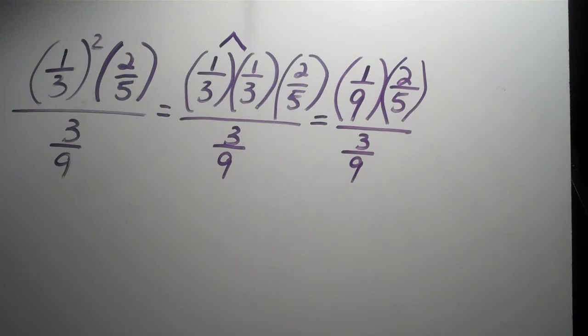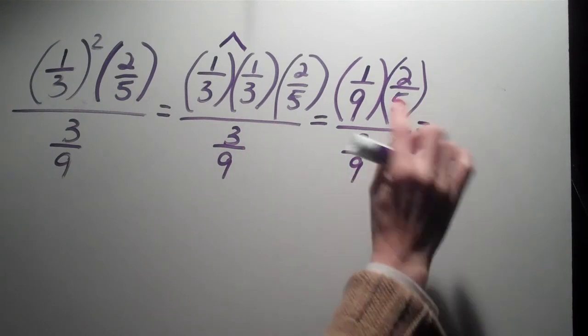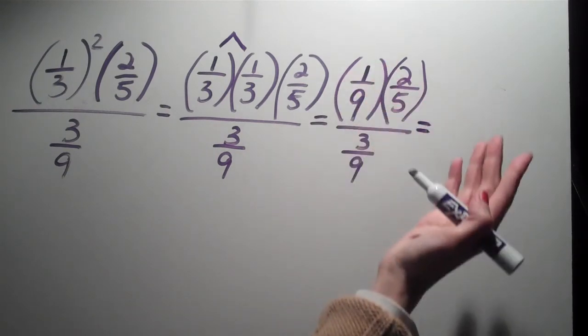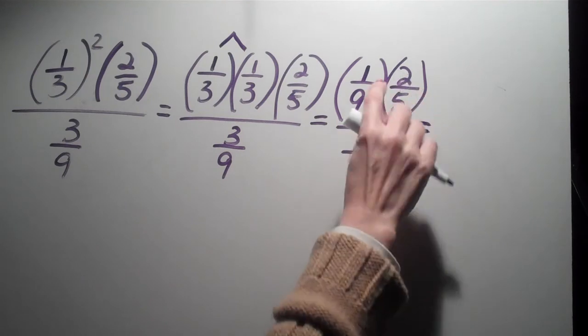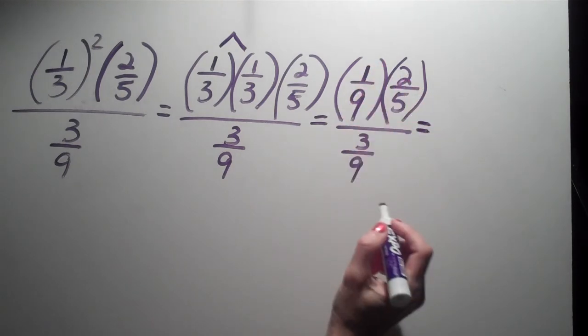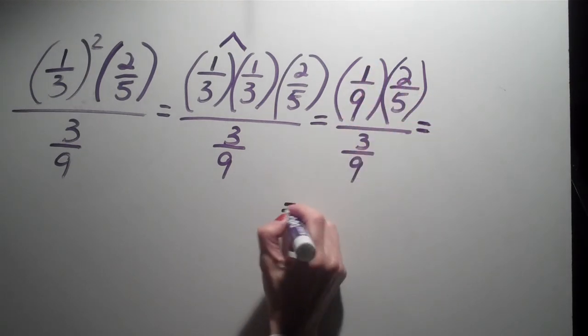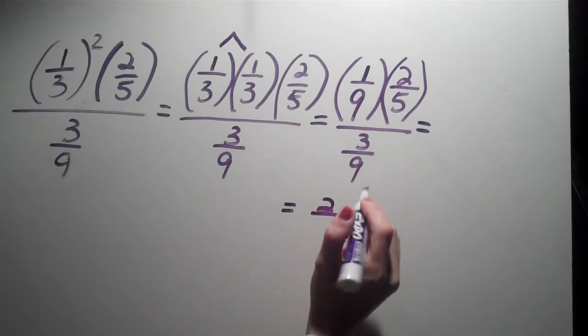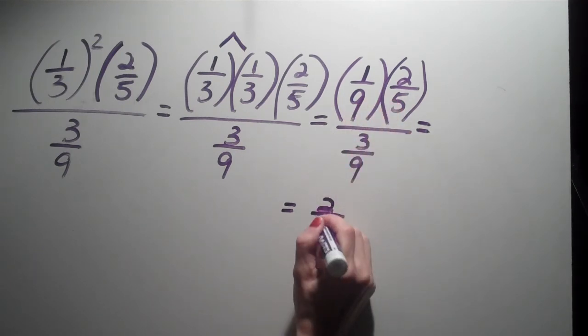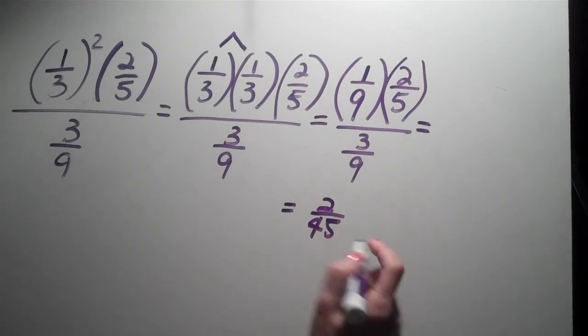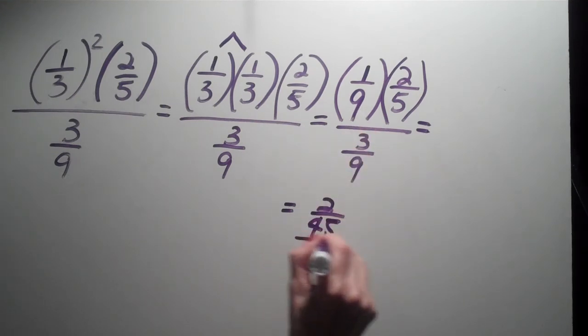Okay, so now what? Well, now I want to take these. Can I cross reduce anything? No. So I'm going to multiply the 2 times the 1 and I get a 2. I'm going to work down here. I get a 2 divided by 9 times 5 is 45. So I have 2 over 45 all over 3 over 9.